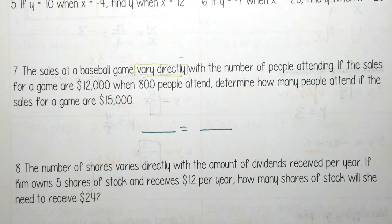The sales at a baseball game vary directly with the number of people attending. If the sales for the game are $12,000 when 800 people attend, determine how many people attend if the sales for the game are $15,000.